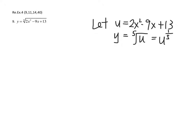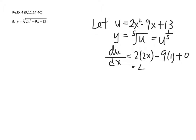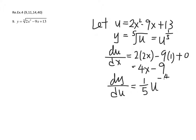Then you differentiate u to get du/dx, which gives you 2 times 2x minus 9 times 1 plus 0, so you will have 4x minus 9. And then you also differentiate y, giving you 1 over 5 times u to the power 1 over 5 minus 1, which is negative 4 over 5.